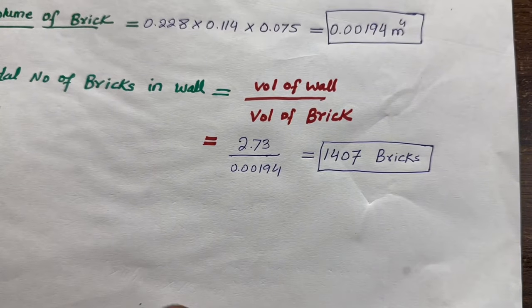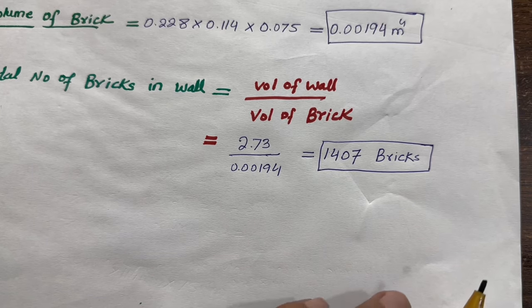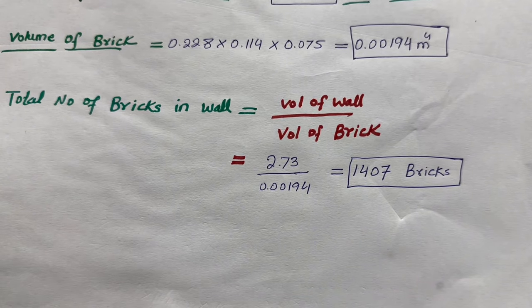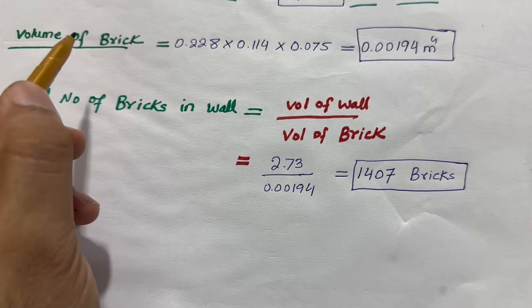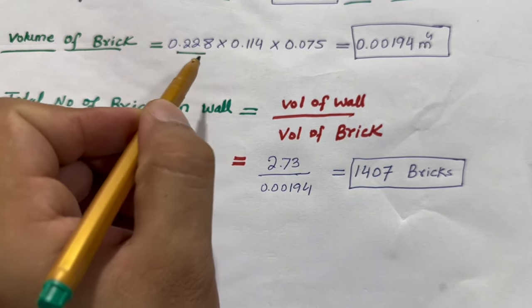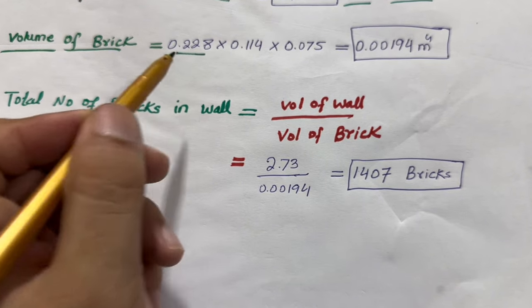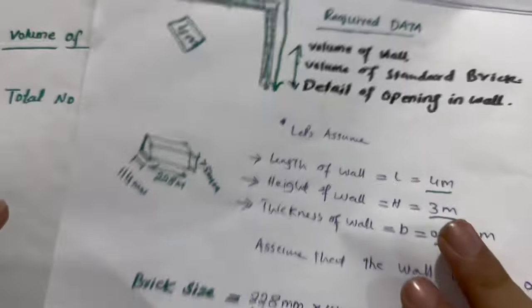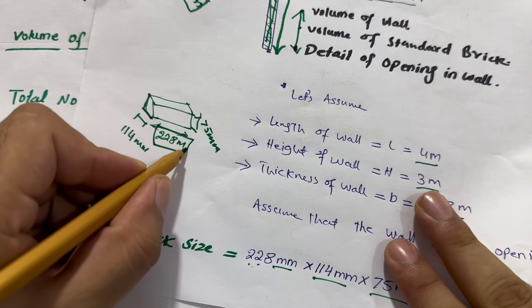Now let me find the volume of brick. 0.228 meter is the length of the brick. You can see which is this one, this is in millimeters. When you convert it to meter, 0.228 meter.